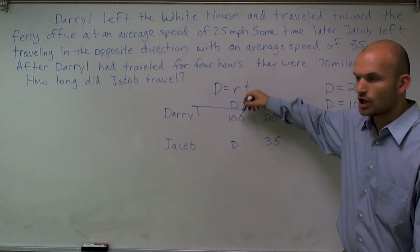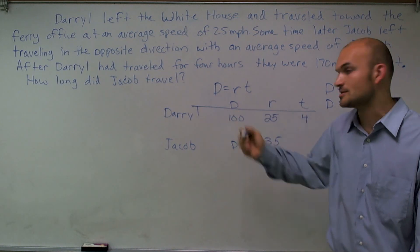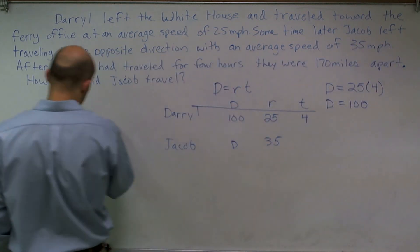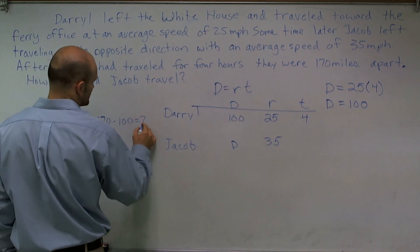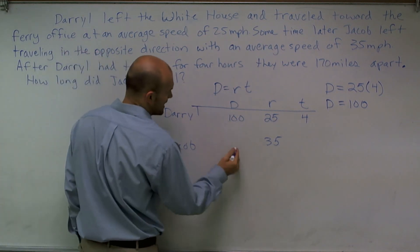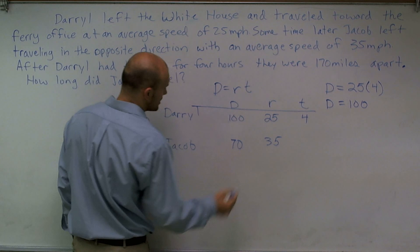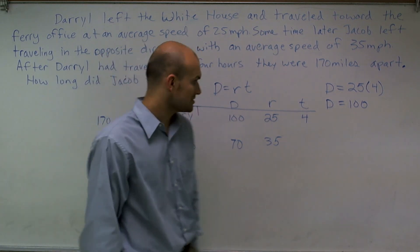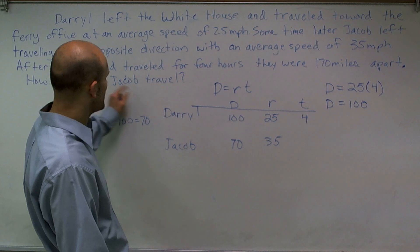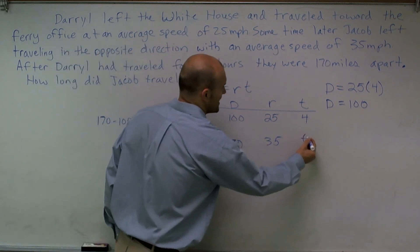Well, if Daryl traveled 100 and they're 170 miles apart, I can do 170 minus 100 equals 70. So therefore, now I know that Jacob traveled a total of 70 miles, but we need to figure out what his time is. We don't know how long Jacob traveled, so I'm going to leave that as t.